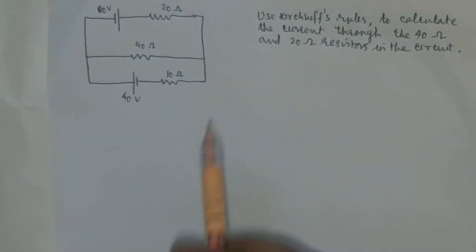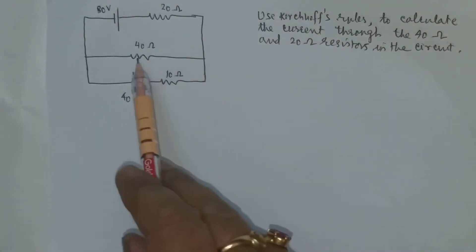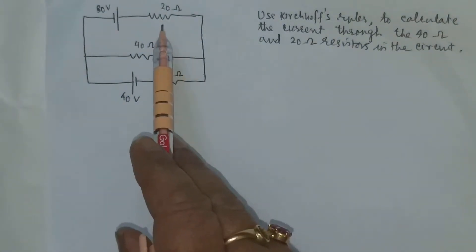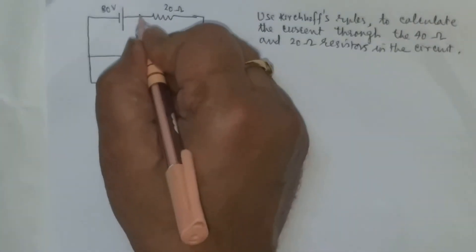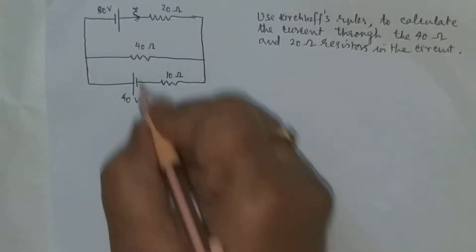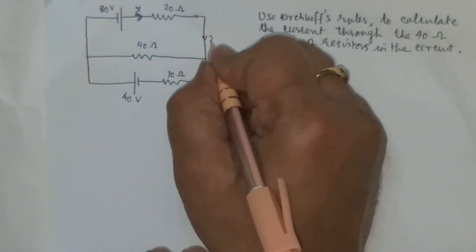The question: this circuit is given and they are asking, using Kirchhoff's rules, to calculate the current through the 40 ohm and the 20 ohm resistor in the circuit. You can begin from any point. Wherever you put the pen, let us say this is x. There is no hard and fast rule that you have to start with any particular point. So this is x.